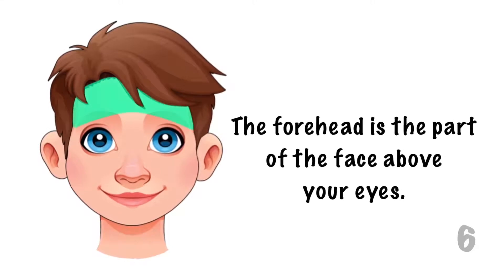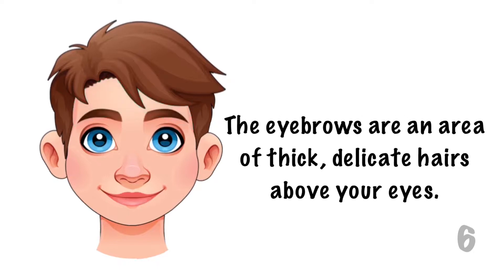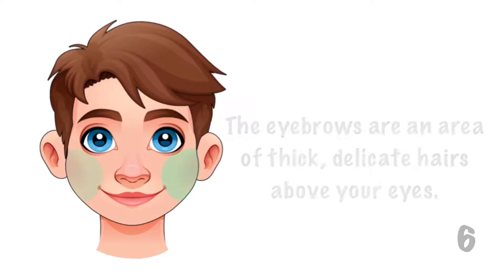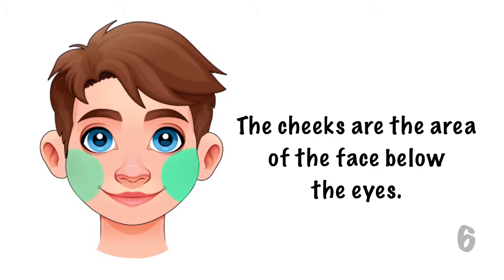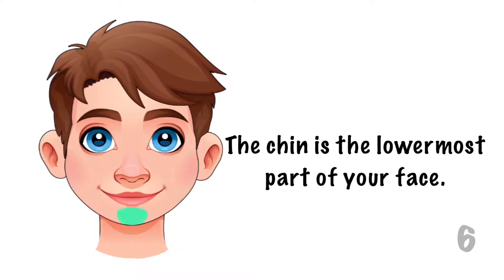The forehead is the part of the face above your eyes. The eyebrows are an area of thick delicate hairs above your eyes. The cheeks are the area of the face below the eyes. And the chin is the lowermost part of your face.